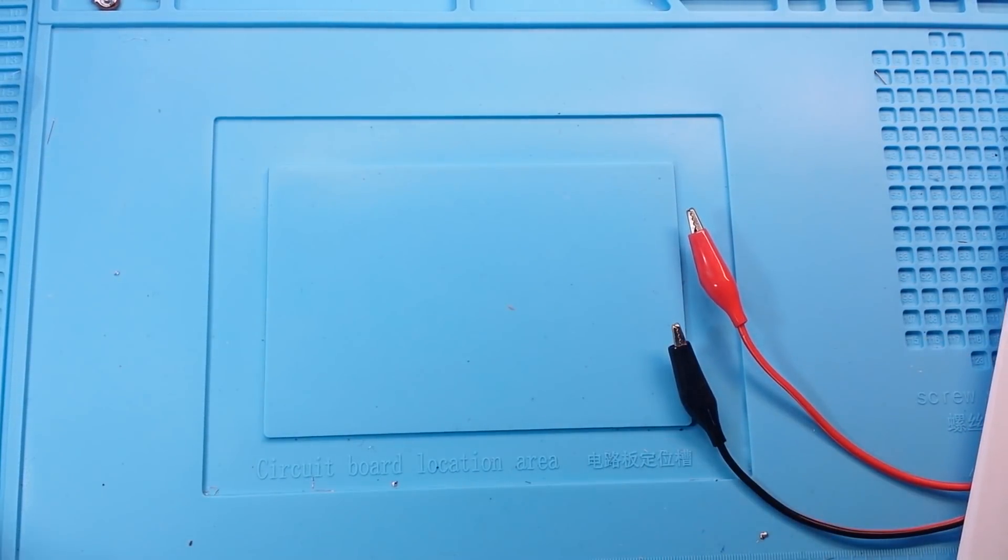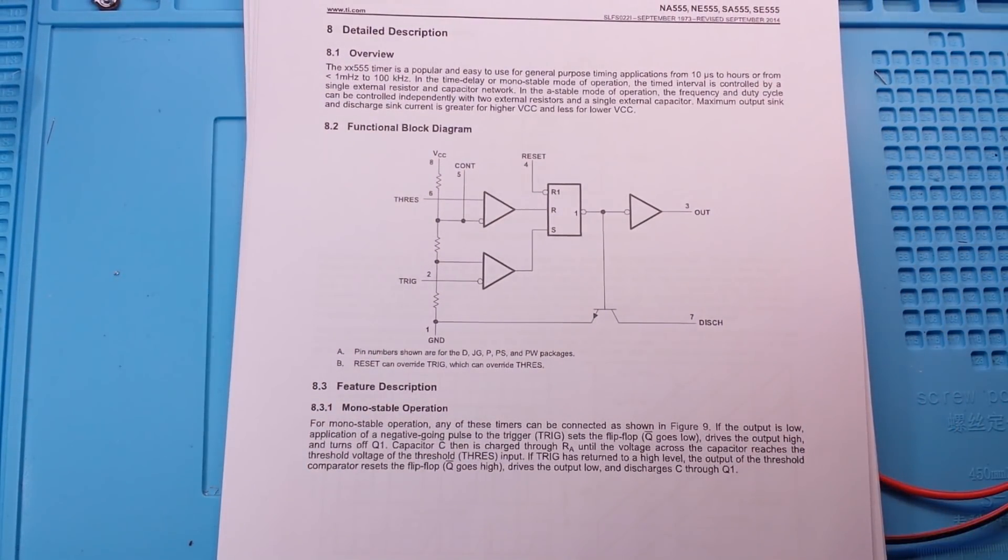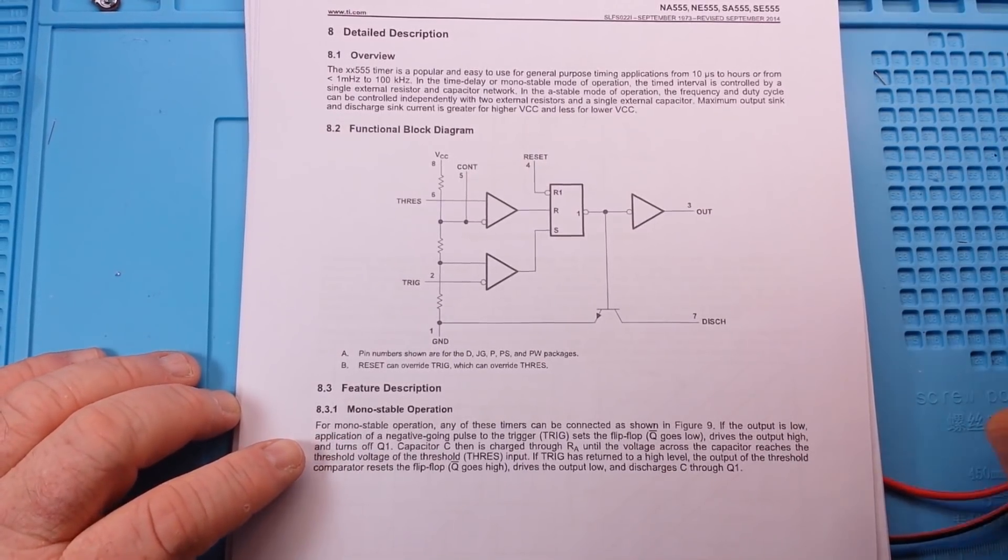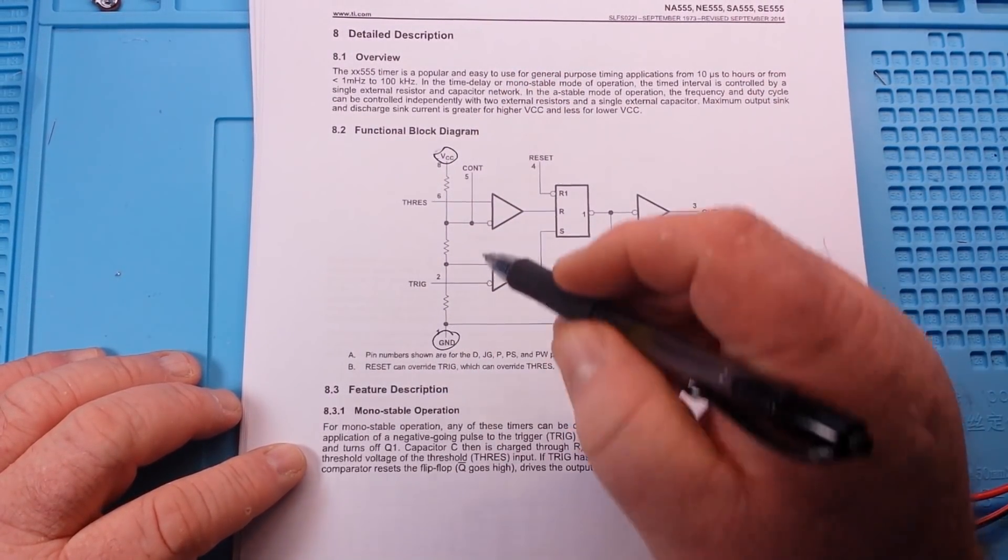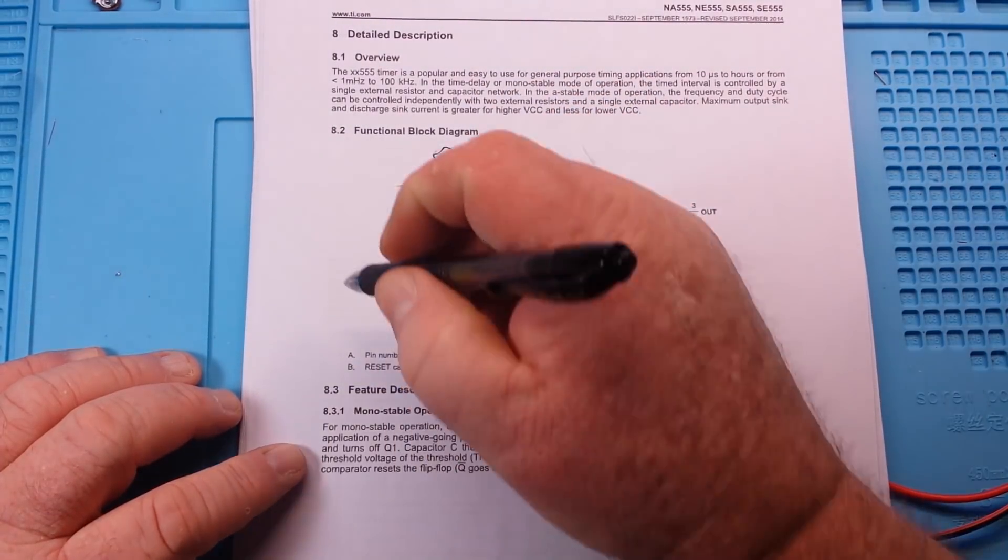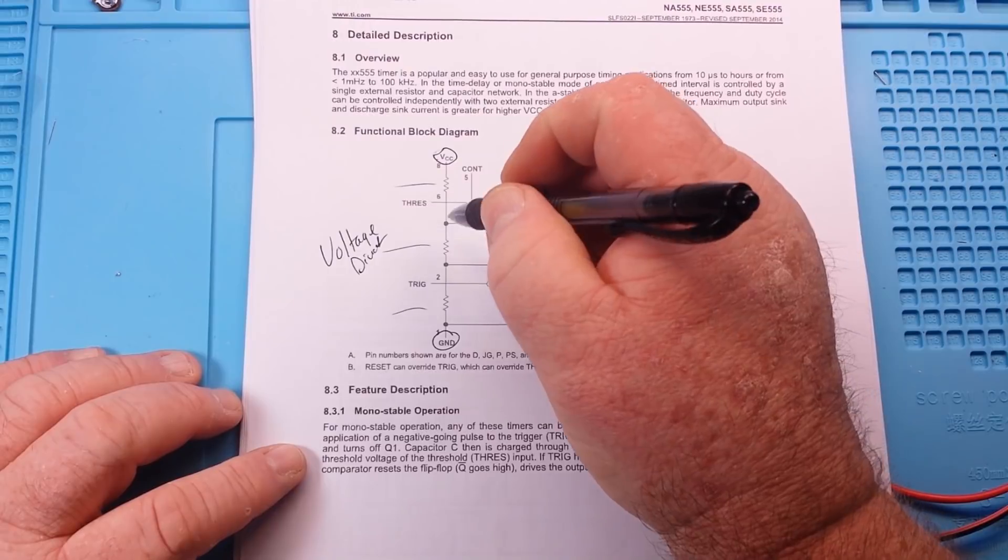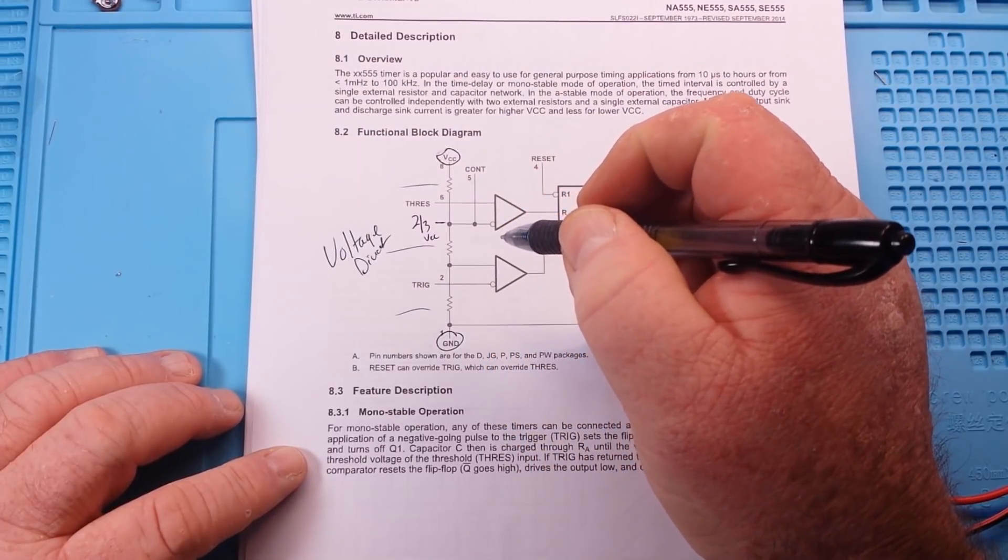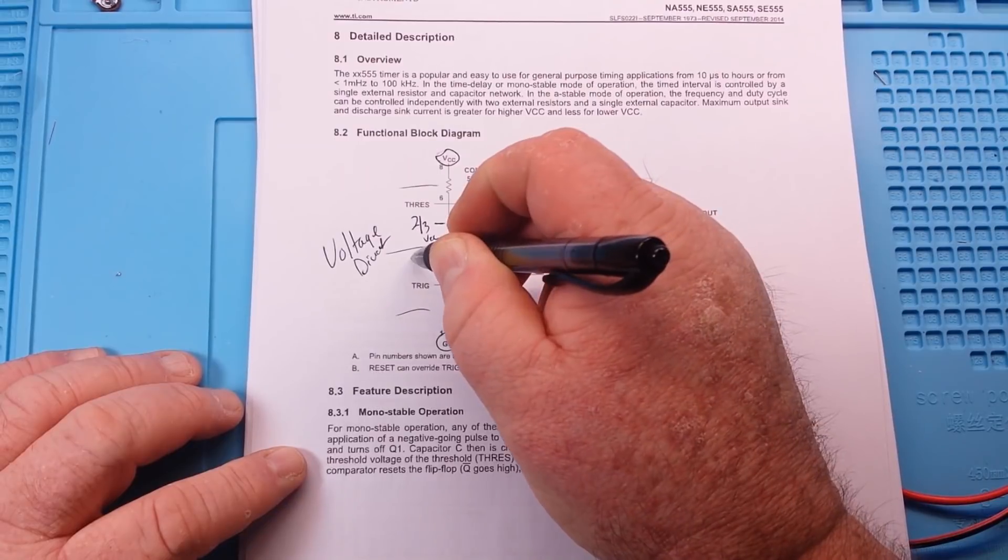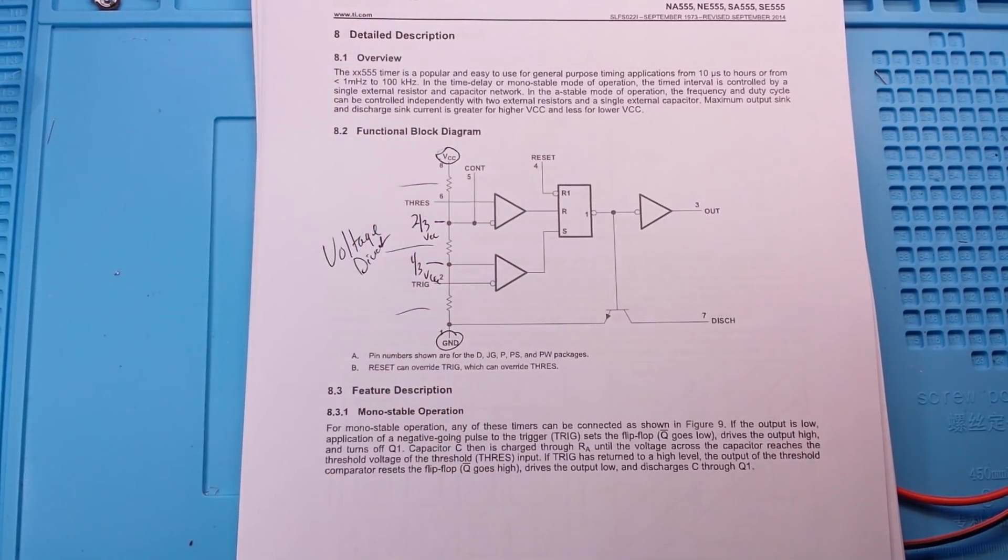And we're going to bring in Section 8 of the datasheet, so that we can talk about this and get a better understanding. This is the internals of the 555 timer. Remember, here's our VCC on pin 8, and here's our ground on pin 1. And what you see between them are three resistors that form a voltage divider. Three equal value resistors, which means this point in the circuit will be two-thirds VCC, and this point in the circuit will be one-third VCC. And that's what gives us the magic of the 555 timer.